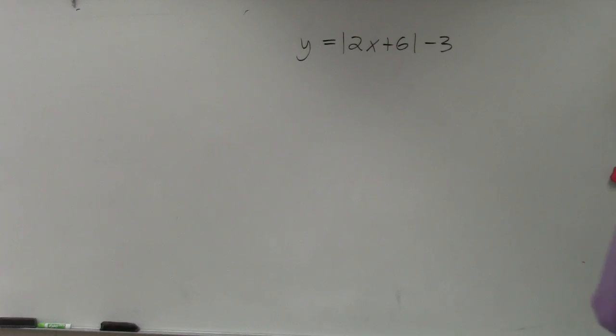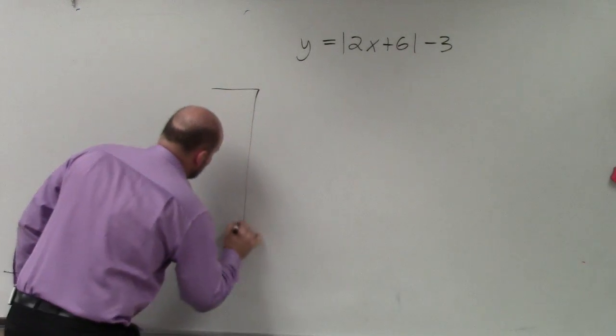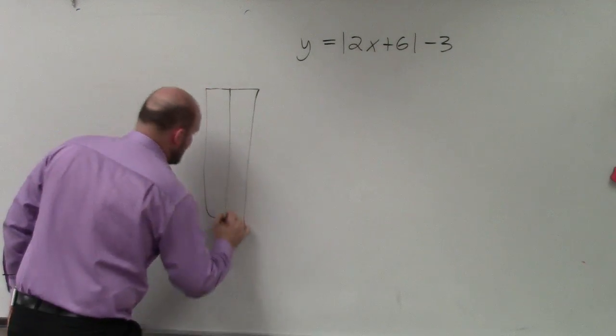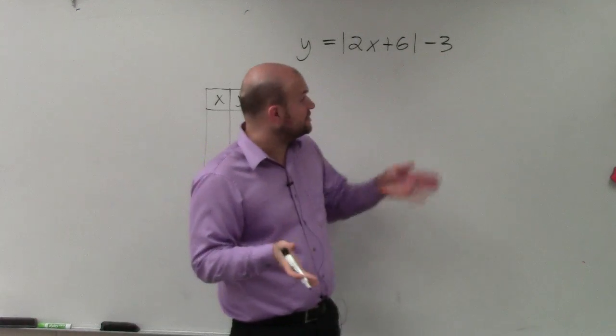So in this example, what we're going to do is we're going to use the table of values to graph this. As I mentioned to you guys, the main important thing when graphing this is to identify the axis of symmetry.